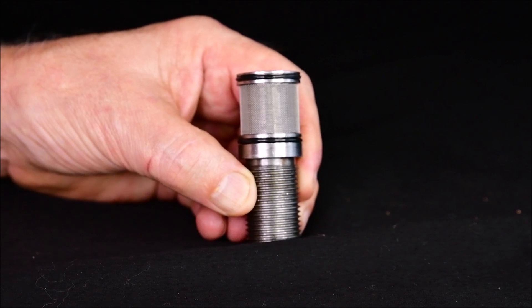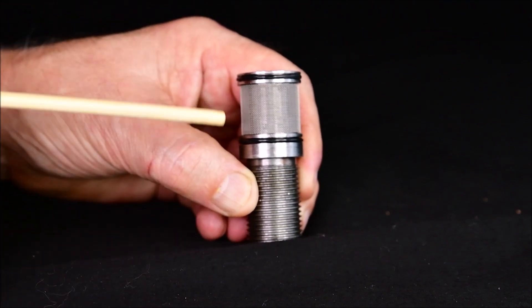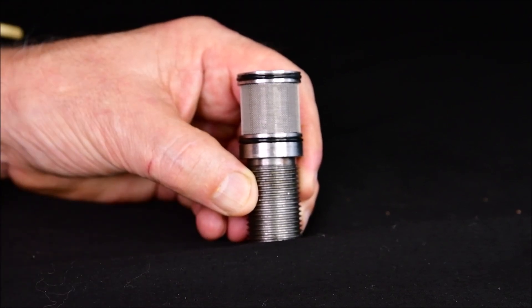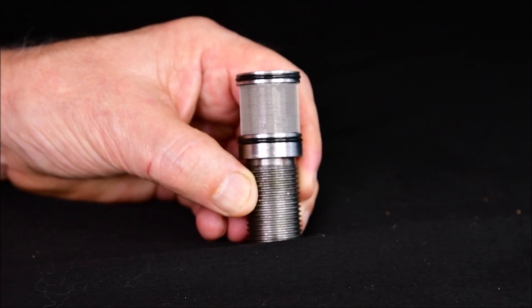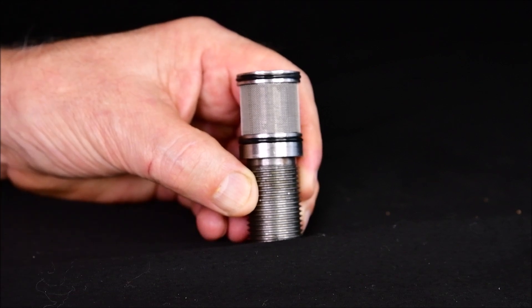These O-rings need to be replaced anytime you take the filter screen out to inspect it or if you've developed a leak on the end of the valve when your pump is running. Whenever the pump is running, if there's oil coming out, these two O-rings must be replaced. It's much cheaper than buying a whole new valve.